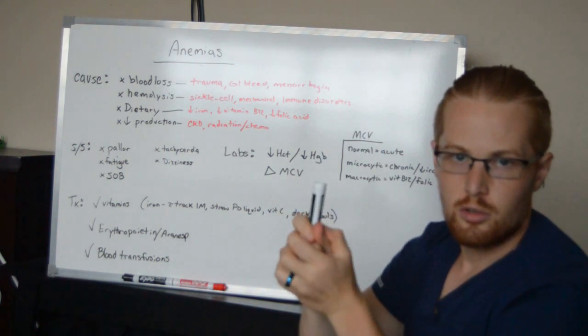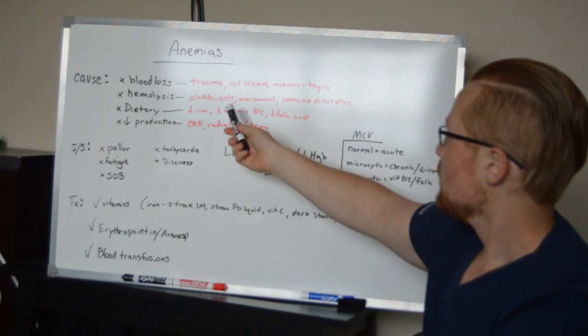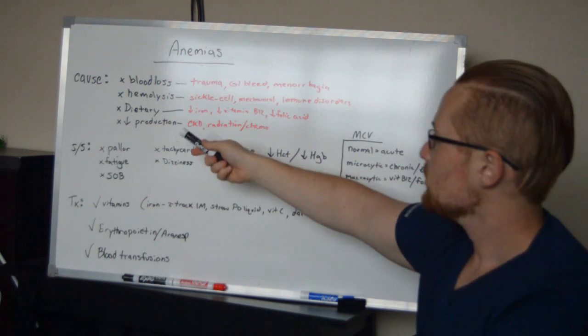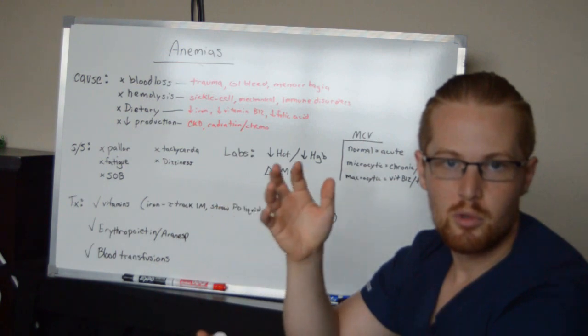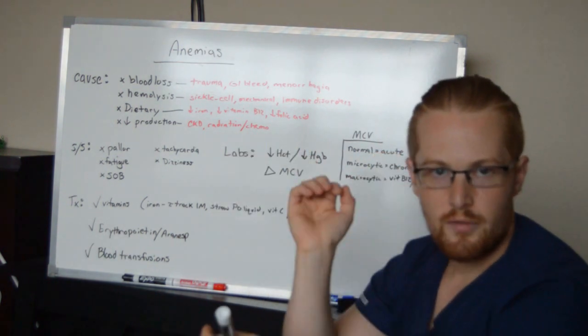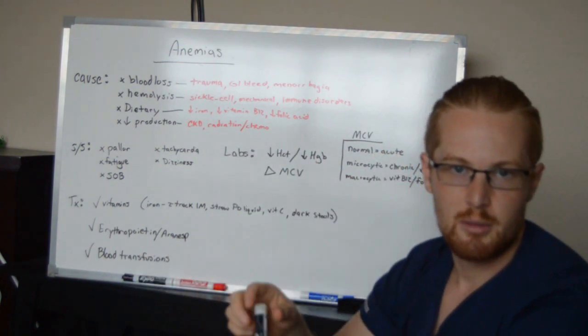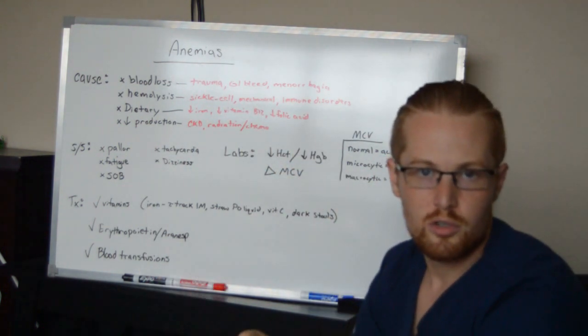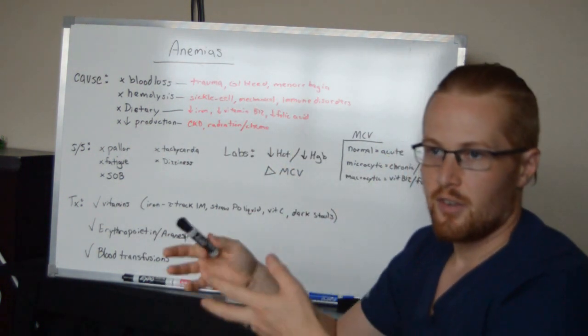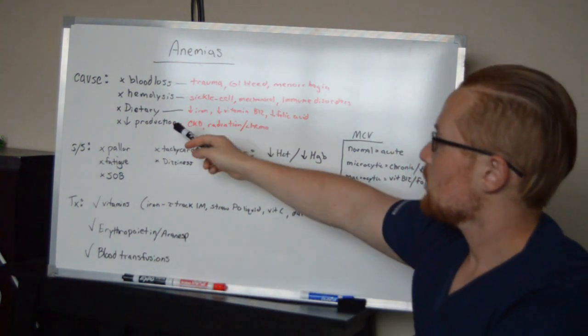You can have mechanical hemolysis, such as if patients have an IVC filter, for example, and the blood's going through the system really fast and it's hitting that metal and sometimes it can hemolyze. Or immunological disorders, in which the body's fighting itself, it can break down its own blood cells.